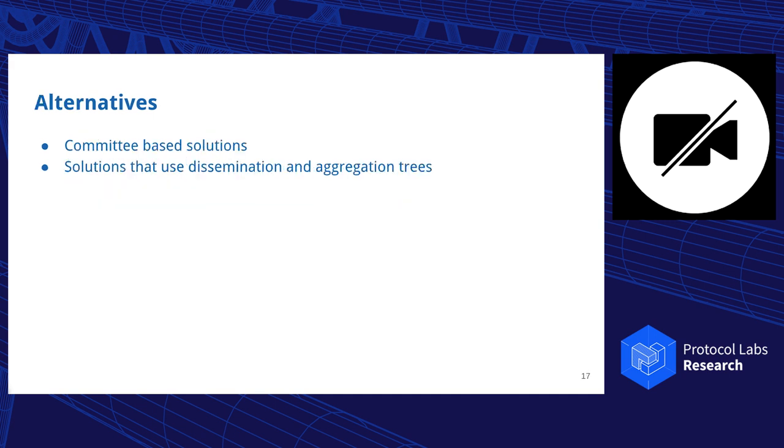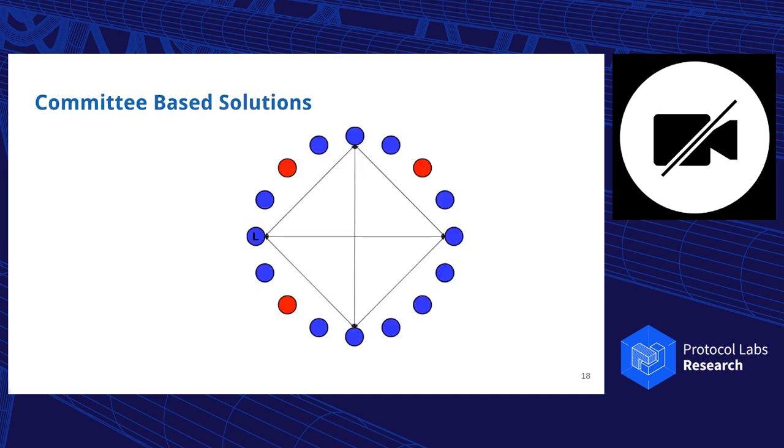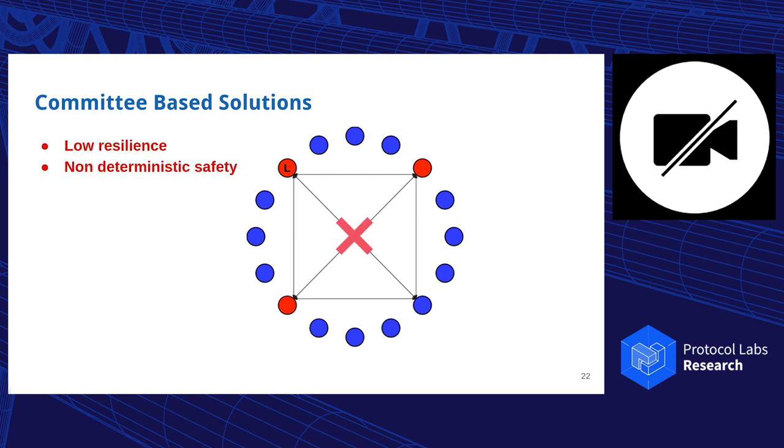And that leads basically to a bottleneck in terms of both bandwidth and CPU. There are a bunch of alternatives in the literature that try to solve that, either committee-based solutions or solutions based on dissemination and aggregation trees. Committee-based solutions are relatively straightforward, where instead of having all the processes agree on the value, each round we select a subset of processes, and that subset will do it in the name of the others and then propagate the result. The problem is there's still a decent chance that in one of these rounds, a majority of incorrect processes are there, which can cause low resilience or non-deterministic safety.